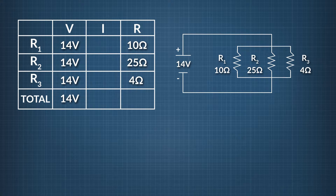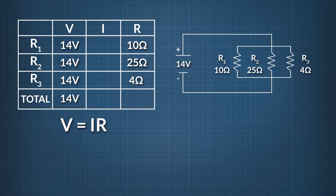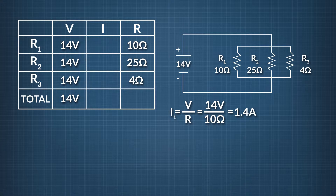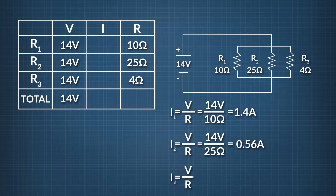Now, looking at the chart, when we know two out of three numbers in a row, we can solve for the third. We use Ohm's Law to find the current through each resistor. I1 equals 14 volts divided by 10 ohms, which equals 1.4 amps. I2 equals 14 volts divided by 25 ohms, which equals 0.56 amps. I3 equals 14 volts divided by 4 ohms, which equals 3.5 amps.